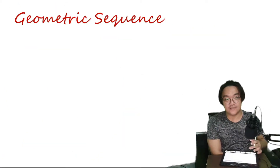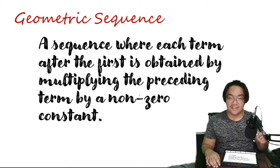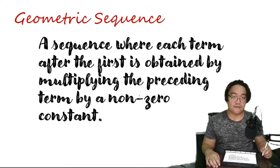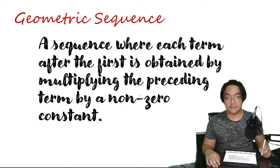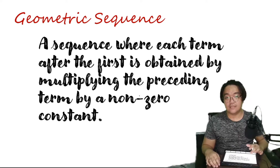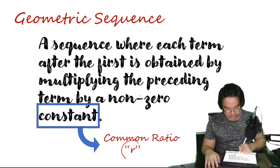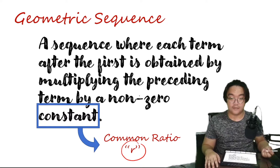So what is a geometric sequence? A sequence where each term after the first is obtained by multiplying the preceding term by a non-zero constant number, and that non-zero constant number is what we call the common ratio, denoted by the small letter r.